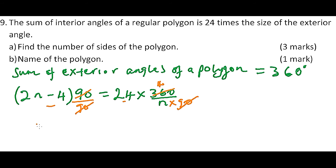Now we have 2n minus 4 equals to - when you multiply this, you get 24 times... this is 96 divided by n. So with this we will be able to form, once you cross multiply, you form a quadratic equation.